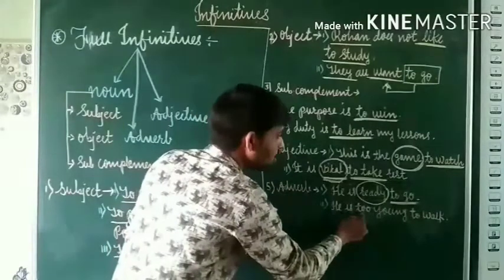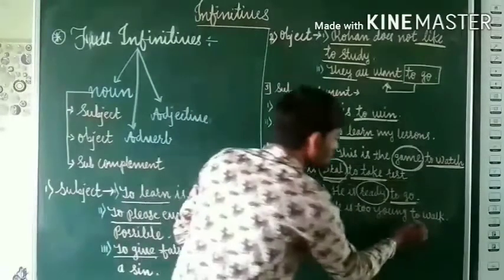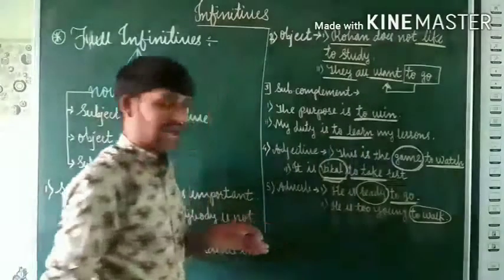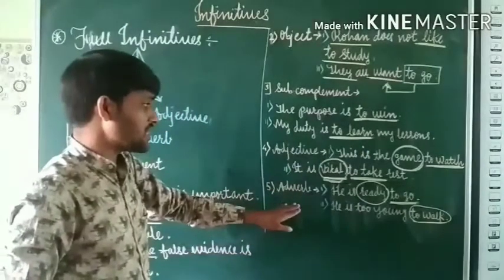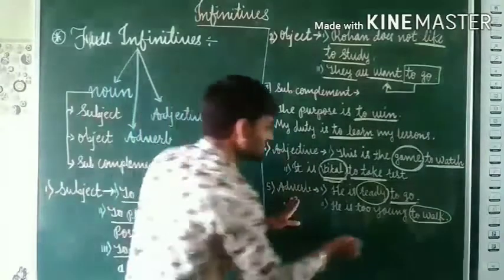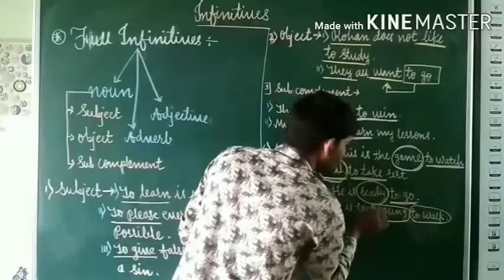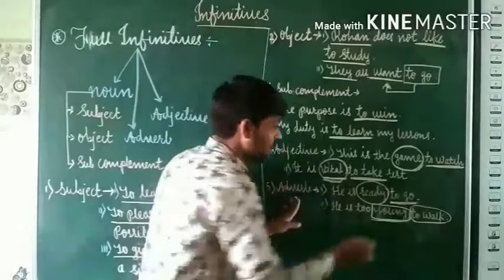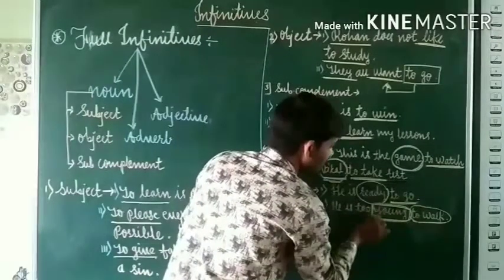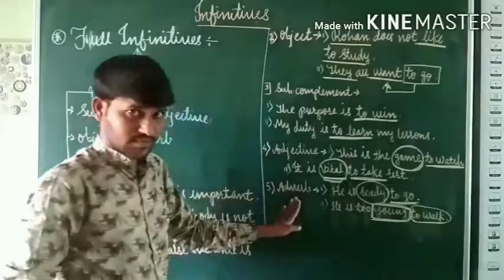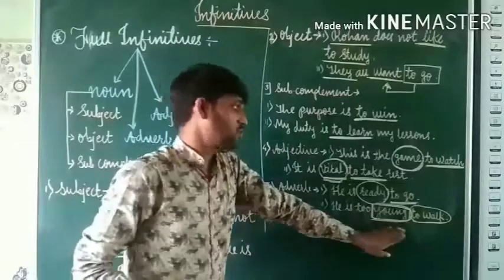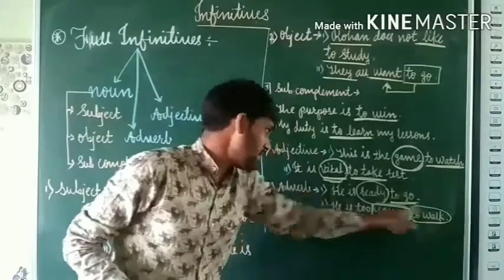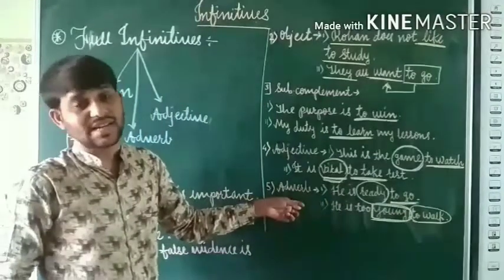In the same manner: 'He is too young to walk.' Here 'to walk' is a full infinitive functioning as a noun, but that noun is functioning as an adverb in the sentence because it is modifying the adjective 'young.' That is why it is functioning as an adverb in the sentence.